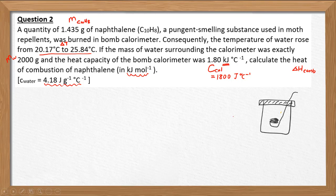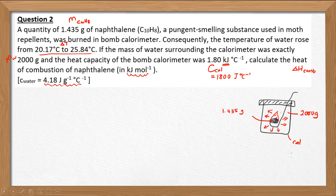Referring to this simple diagram: when we burn the naphthalene — say 1.435 grams — the heat is released from this reaction. The heat released is then absorbed by the calorimeter, for which you have the heat capacity, and also absorbed by the water inside, for which you have the mass. So both water and calorimeter absorb the heat. Write the balanced thermochemical equation for this combustion reaction, with enthalpy as a negative value since heat is released.